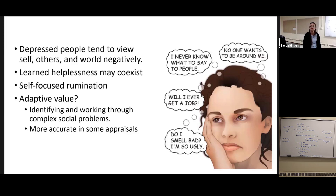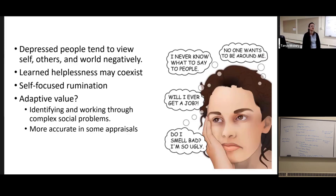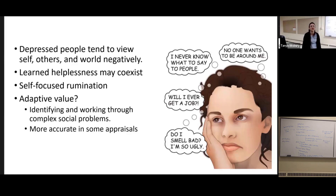Martin Seligman's dog experiment with yoked pairs: he trained some dogs to push a lever to turn off shock, but other dogs received the exact same shock with no lever to control it. When he put the dogs in a new situation and tried to teach them to jump over a hurdle to avoid shock, the dogs that had initially been trained on the lever learned that quickly. The other dogs — the yoked pairs who had just received the shocks — had a hard time with that task. They just kind of lay down and gave up, because they had learned that what they do doesn't matter, so why bother?